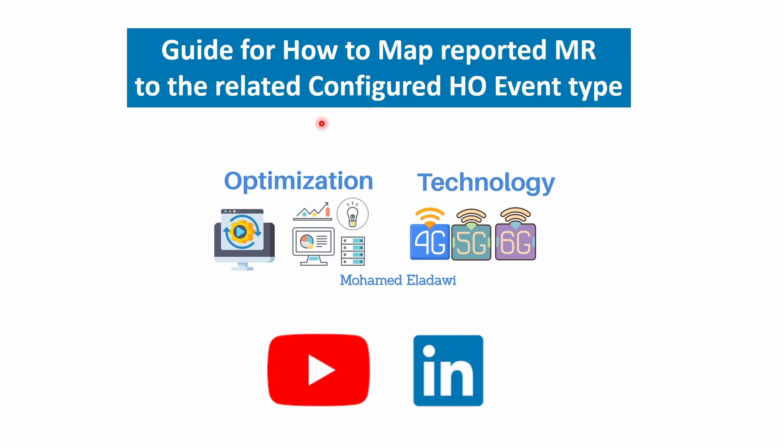In this video, I'm going to give a quick guide on how to map the measurement report to the related configured handover events, such as A3 event, A4 event, B1 event, and A2 event. This is very important during handover signaling analysis and troubleshooting. The related handover events and their configuration parameters — such as time-to-trigger, offsets, and hysteresis — are delivered through the RRC configuration message sent by the base station (4G eNodeB or 5G gNodeB). Let's go through some examples.